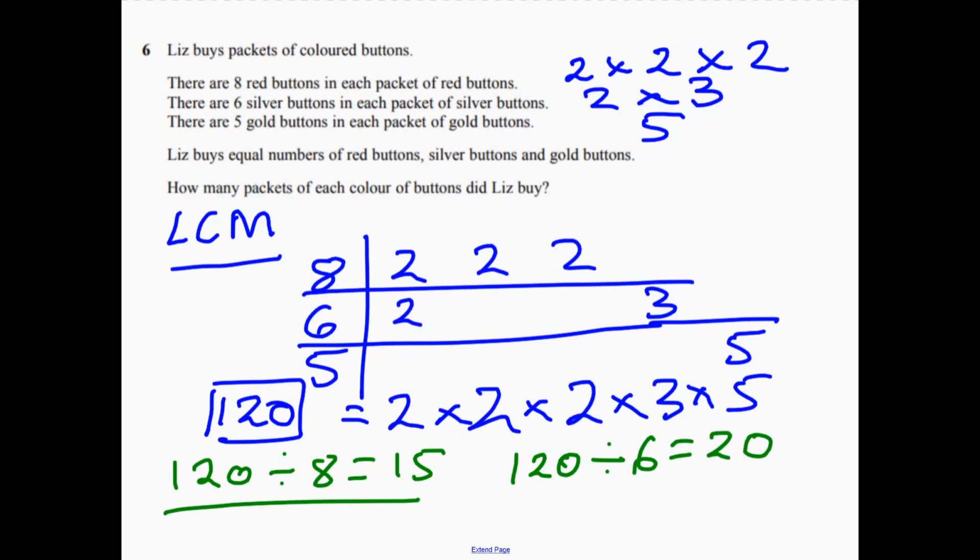And then for gold, gold was the other one, wasn't it? 120 divided by 5, and that's going to be 24. So all together, we can have 15 packets of red ones, 20 packets, and 24 packets.